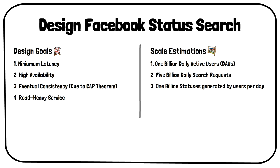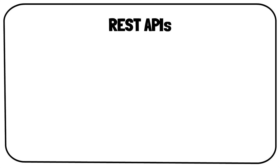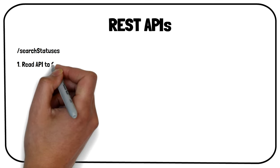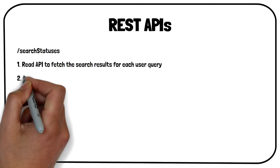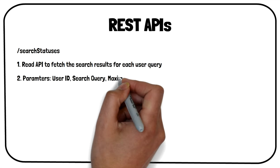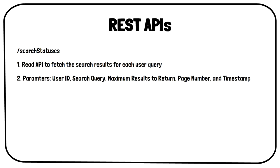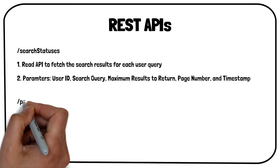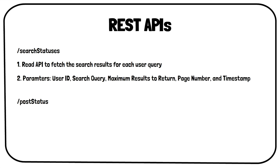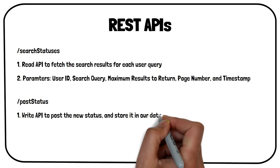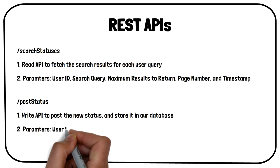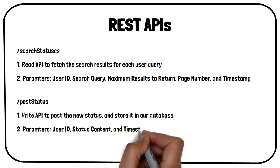Now, let us discuss the REST APIs that we will be developing for this problem. To interact with the system, we will need two APIs. The first one is the Status Search API — a read API to fetch the search results for each user query. The client will send user ID, search query, maximum results to return, page number, and timestamp as the request parameters. The second one is the Post Status API — a write API to post the new status and store it in our database. This API requires user ID, status content, and timestamp as the parameters.